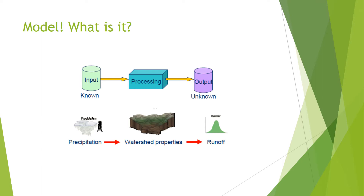What is a model? As you know, a model is something where we give the input, the processing is usually done by computer, and we get the output. Usually the input is known because we select the parameters, and the processing is done by machines with equations, and then the output is unknown. Same goes for a hydrologic model — the main input is precipitation. In the Malaysian case we have rainfall, plus watershed properties such as soil properties and a digital elevation map, and the location of rivers. When we have both of these, we want to produce runoff, so runoff is the output.